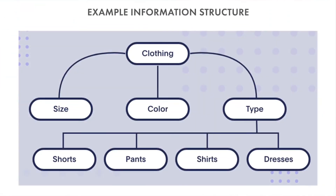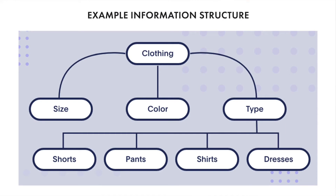To understand what metadata is, we must tie it to taxonomy. A taxonomy is a particular categorization of information, leveraging metadata. To give you a better idea, let's start with an example of a clothing store. We organized our clothing items by a few different options: color, size, and type. Each of these options is part of our clothing taxonomy and lives in a hierarchy within your organization structure.